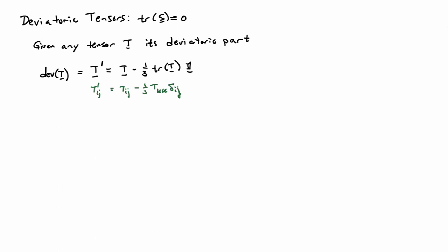Given any tensor T, its deviatoric part is denoted either as dev T or T with a superscript prime. The deviatoric part is defined as T minus one-third of the trace of T times the identity, written in both direct and index notation. It is easy to verify this is traceless: the trace of the first term gives trace T, the trace of the identity is three, so the three cancels the one-third, leaving trace T minus trace T equals zero.